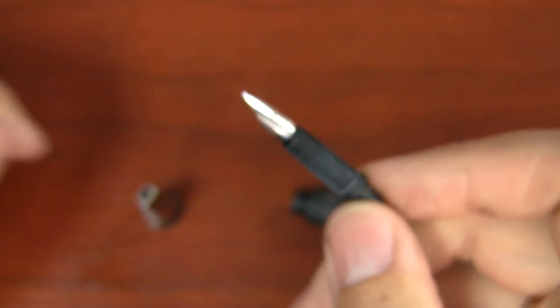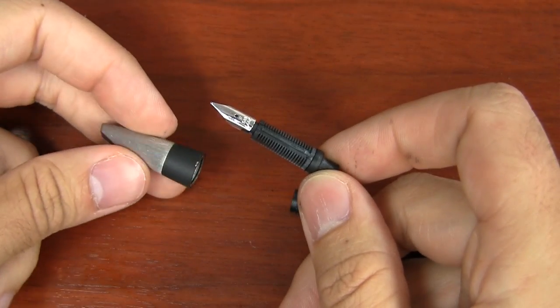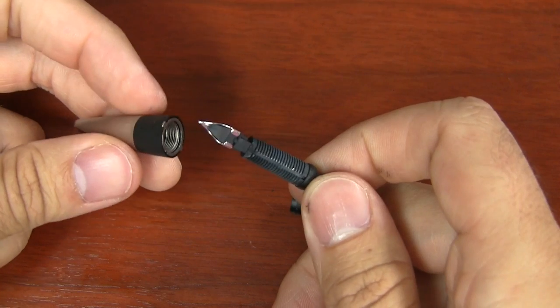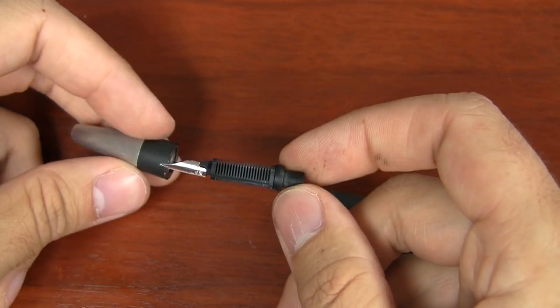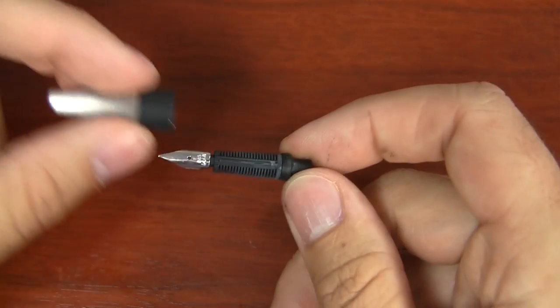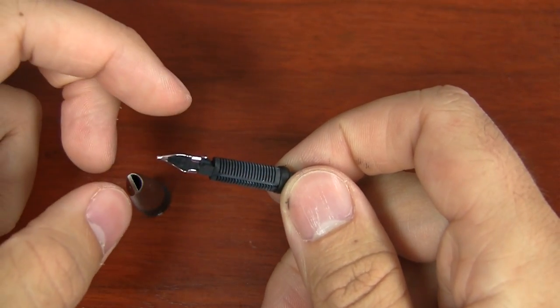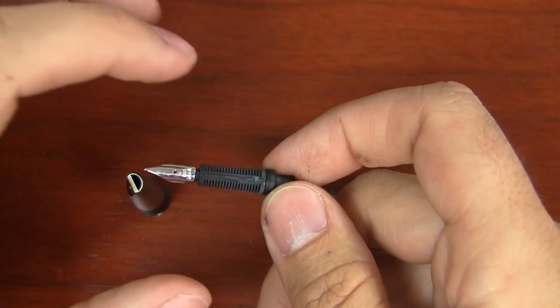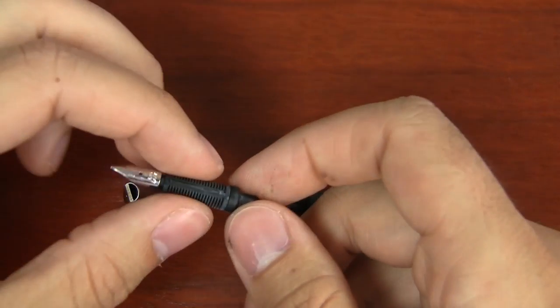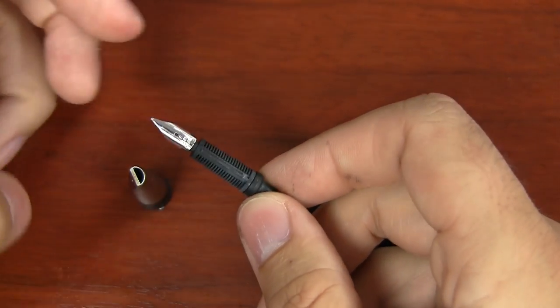Now if you're ever curious about why doesn't Lamy sell their nibs apart from their pens on the Lamy 2000? They do it for all their other pens, they just don't for this one. It's because it's kind of a complicated setup. It doesn't actually slide off, at least not easily that I know of, off of this feed. And it's gold, so it would be more expensive anyway. It's just not really conducive to selling apart from the pen. So they don't do it.